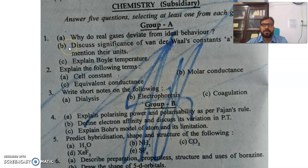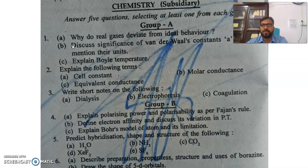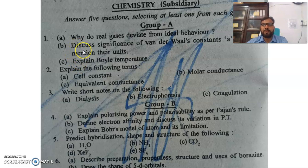Now you can see the questions. First question: why do real gases deviate from ideal behavior? Discuss the significance of van der Waals constants A and B and mention their units. Explain Boyle temperature. Question number 1 has 3 parts — don't miss any part. If you miss any part of the question, you will lose marks.